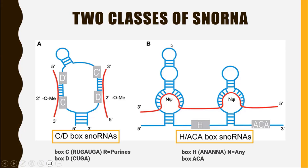This blue line is representing the small nucleolar RNA, and this gray portion is showing the repetitive units called Box H and Box ACA.